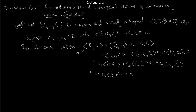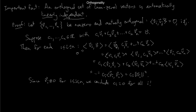We've deduced that c1 through cn are all equal to zero — they have to be. That's exactly what we needed to prove to show that v1 through vn is linearly independent. Orthogonal non-zero vectors are automatically linearly independent. That's the proof.